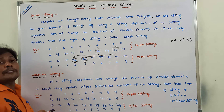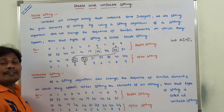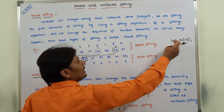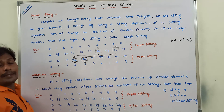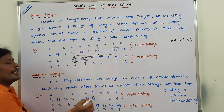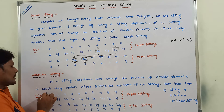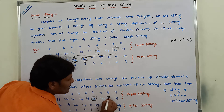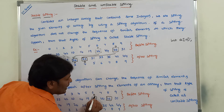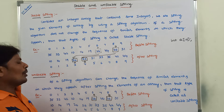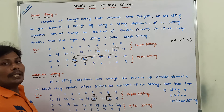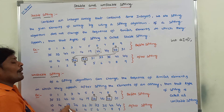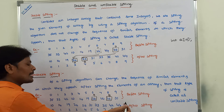If a sorting algorithm can change the sequence of similar elements in which they appear, then that type of sorting is called unstable sorting. Here I am taking the same integer array of size 10 with 10 unsorted elements, indexed from 0 to 9. The similar contents are 26 and 26 — denoted as 'a' and 'b'. Before sorting, 'a' appears first and then 'b'. Now we apply a sorting algorithm.